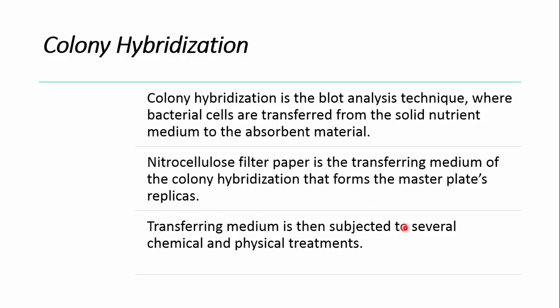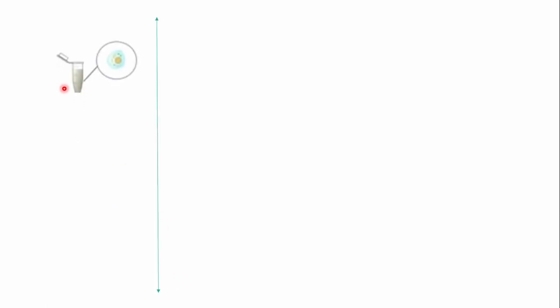The transferring medium is then subjected to several physical and chemical treatments. But before discussing colony hybridization, we must have our master plate harboring our desired gene of interest. So how will we prepare our master plate? First, we need to break the cell wall and cell membrane.